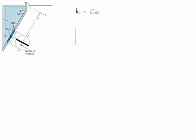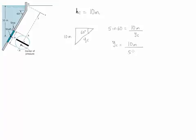So if we do a little bit of geometry, notice that this is going to be the 10 meters that we have, and this angle over here is 60 degrees. So what we are going to find out is the value of YC. If we evaluate sine of 60, we find it to be equal to 10 meters divided by YC. Therefore YC is equal to 10 meters divided by the sine of 60. Please remember that when it's an incline, the coordinate system of Y is along the angle of inclination of the particular wall.